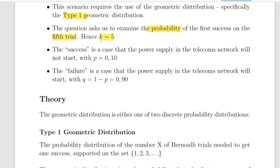This particular trial is the fifth trial, so k is equal to 5. The success is the case where the power supply in the telecoms network will not start, and we have a probability of 0.10 for that. The failure is the case that the power supply will start, and the probability of that is 0.9.